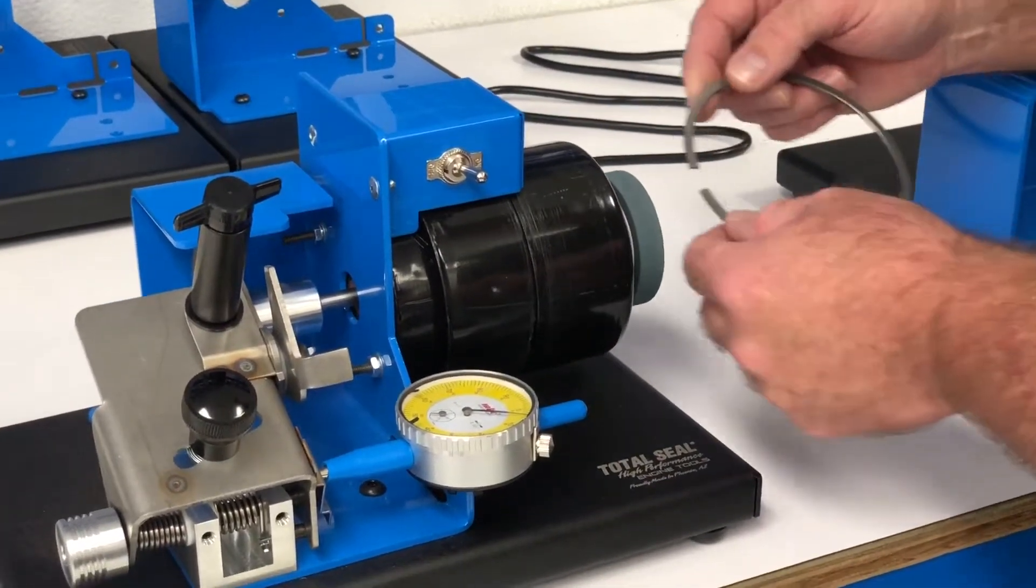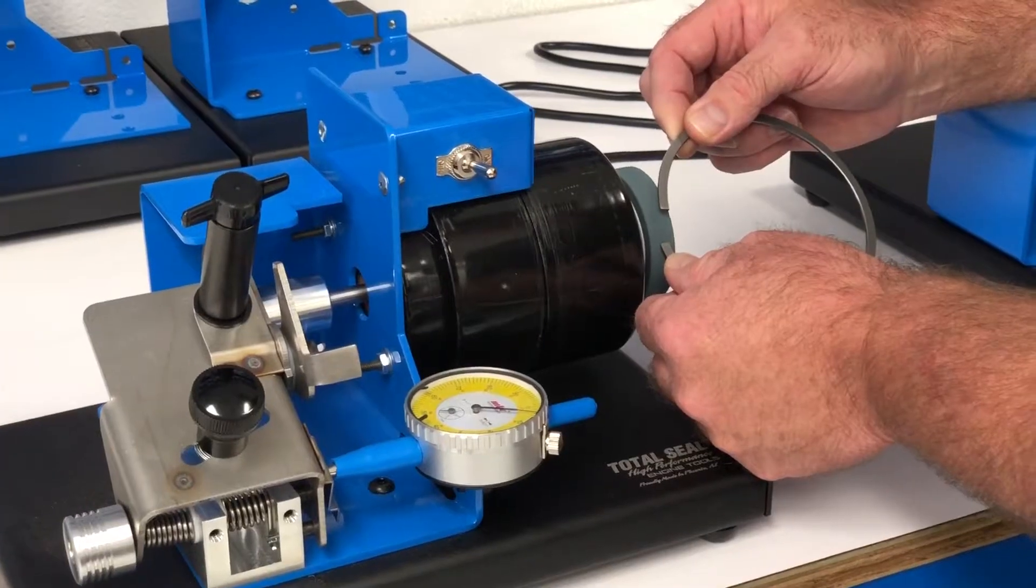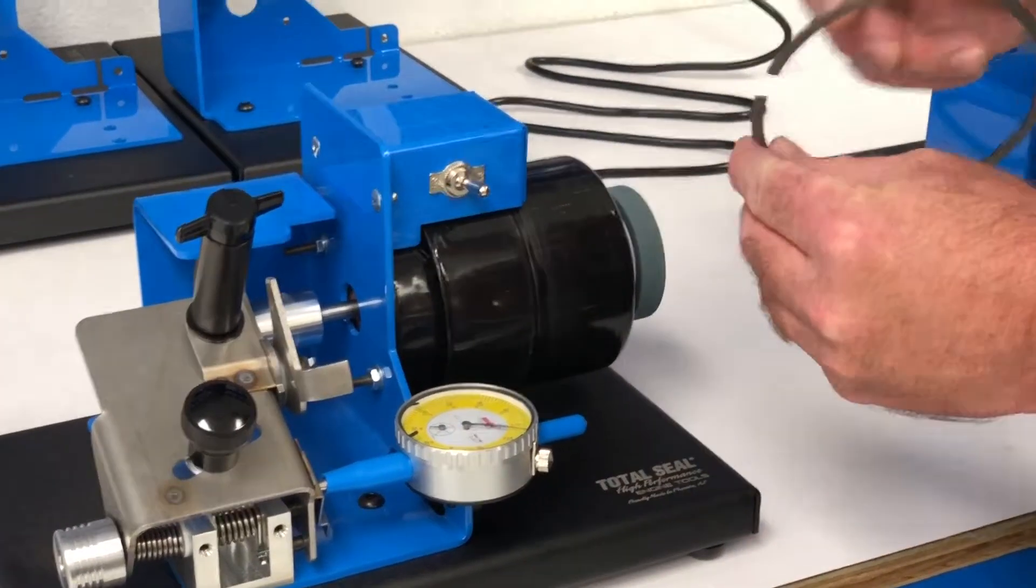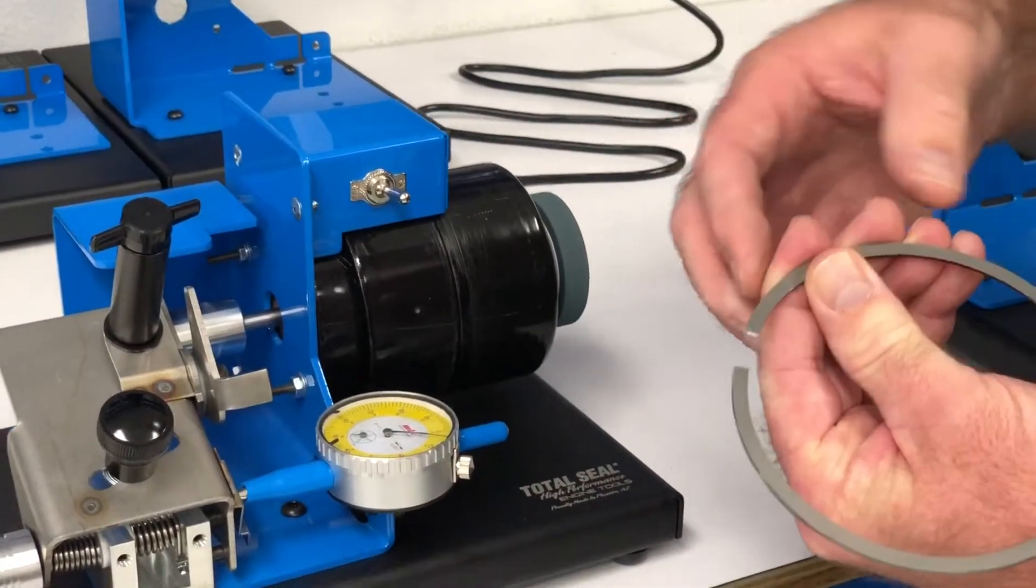And that's really it. It's real simple to deburr a ring with this. As long as you're really real light on the pressure it's all you need. And that's how you deburr a ring.